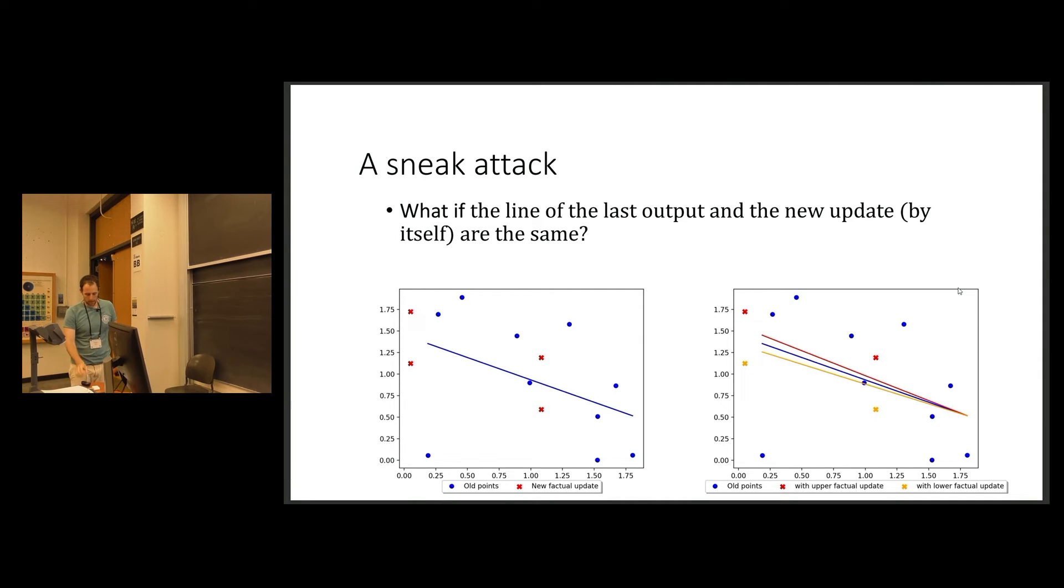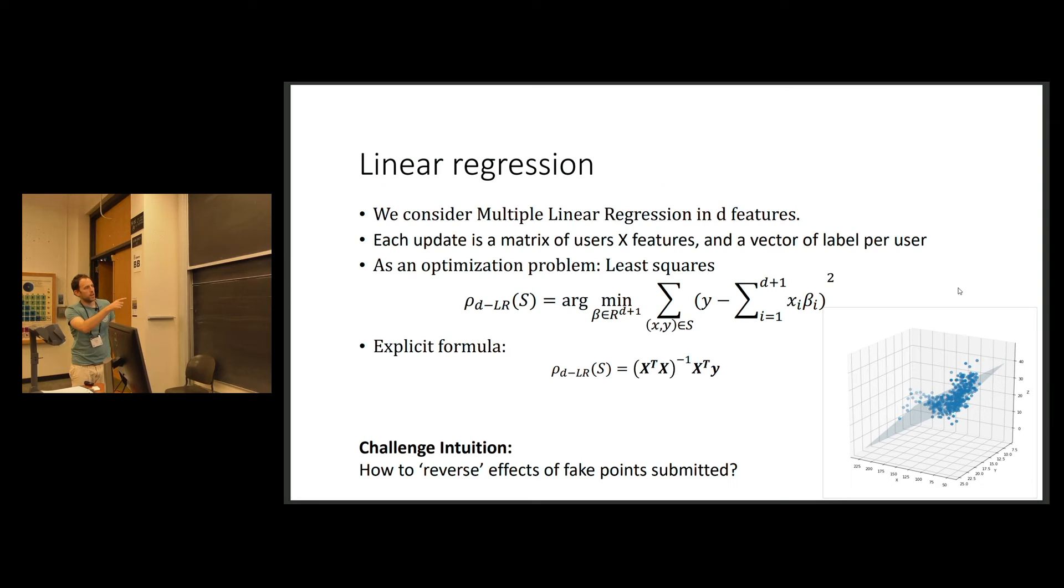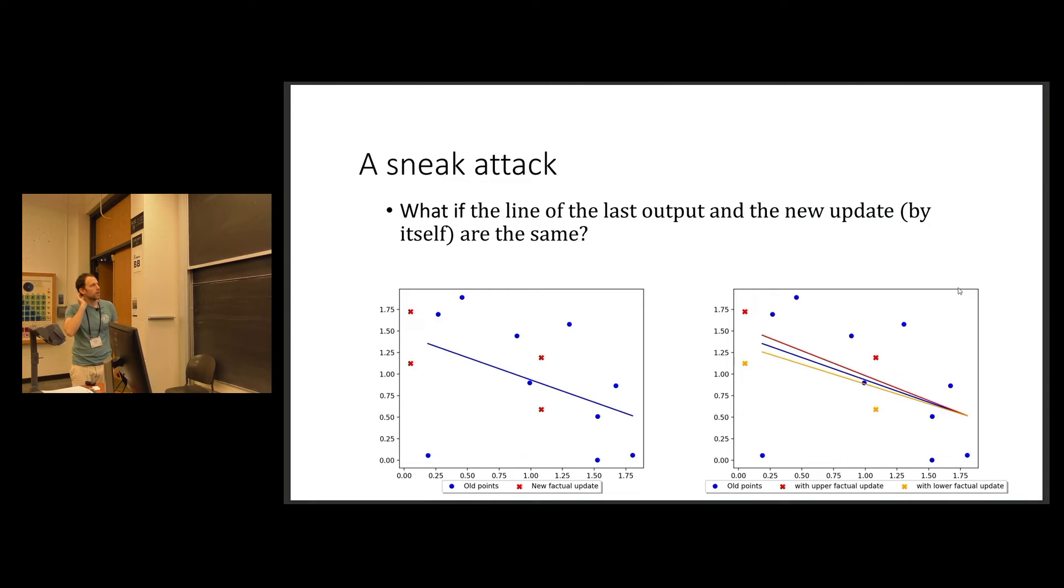So actually to show vulnerability, the premise of the question is a bit wrong because the question assumes that to mislead the others, you would submit extra fake points. But actually what you can also do is omission. We call it an omission attack. You can omit some points that you have and complete them later. So this is like a sneak attack. Let's assume that the underlying data is the blue points. It's not visible to the agent, but what is visible is the blue line. And now exactly the red points come as a nature update to the agent.